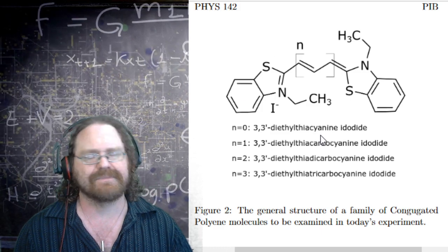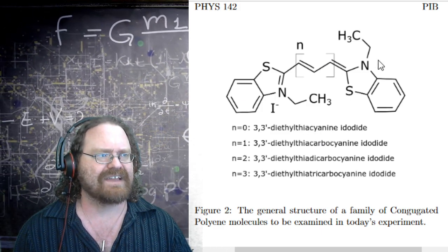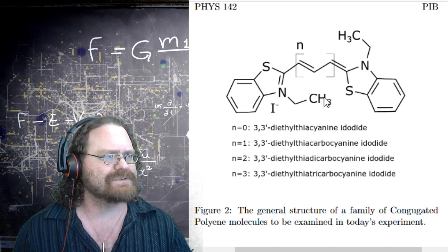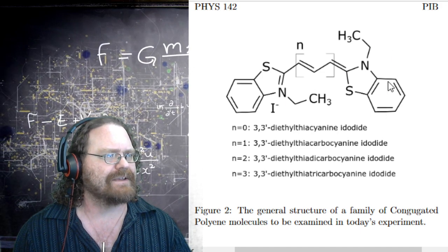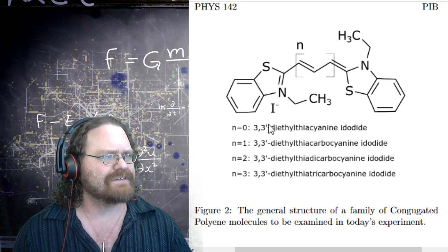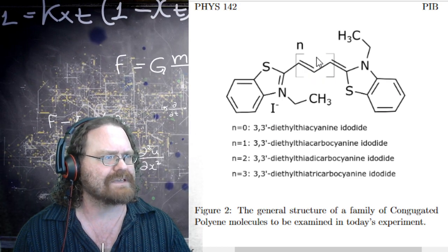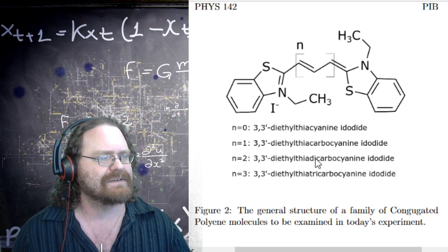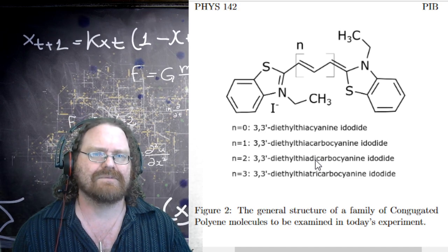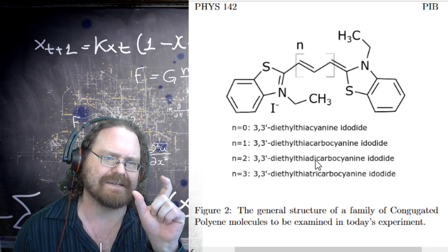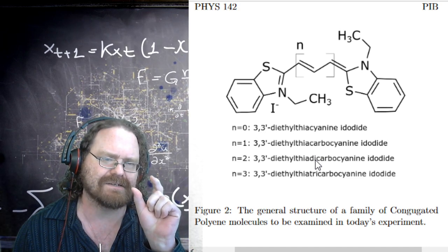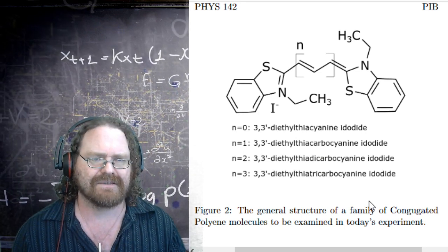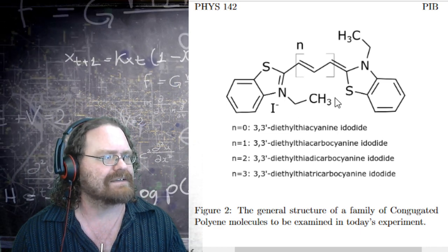For the Particle in a Box experiment, we are going to look at a family of molecules right here. These molecules have some N-groups right here and right here, and each of these family of molecules will add more and more double carbon bonds between the N-groups. For part of the pre-lab, you looked at what the length of a single bond is, what the length of a double bond is, and also what the length of a benzene bond is.